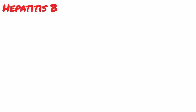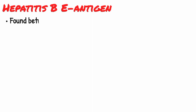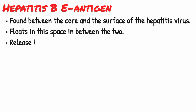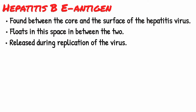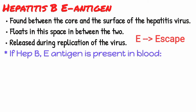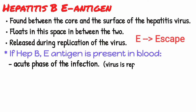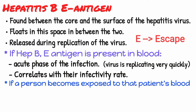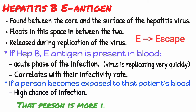The next antigen is the hepatitis B E antigen. The HBeAg is found between the core and the surface of the hepatitis B virus, and it floats in the space in between the two. It is released during replication of the virus — remember, E antigen escapes, so E is for escapes during replication. Therefore, if you find the HBeAg is present, it implies the patient has an acute phase of the infection where the virus is replicating very quickly. The level of the HBeAg correlates with their infectivity, so if the HBeAg is higher, that person is more infectious to others.